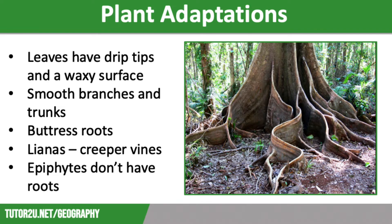In the rainforest you will also find lianas. These are woody vines or creepers that are rooted to the ground, but they twist around tree trunks to reach the sunlight right at the top. They also hang down from branches so they can be used by animals to swing between the trees.